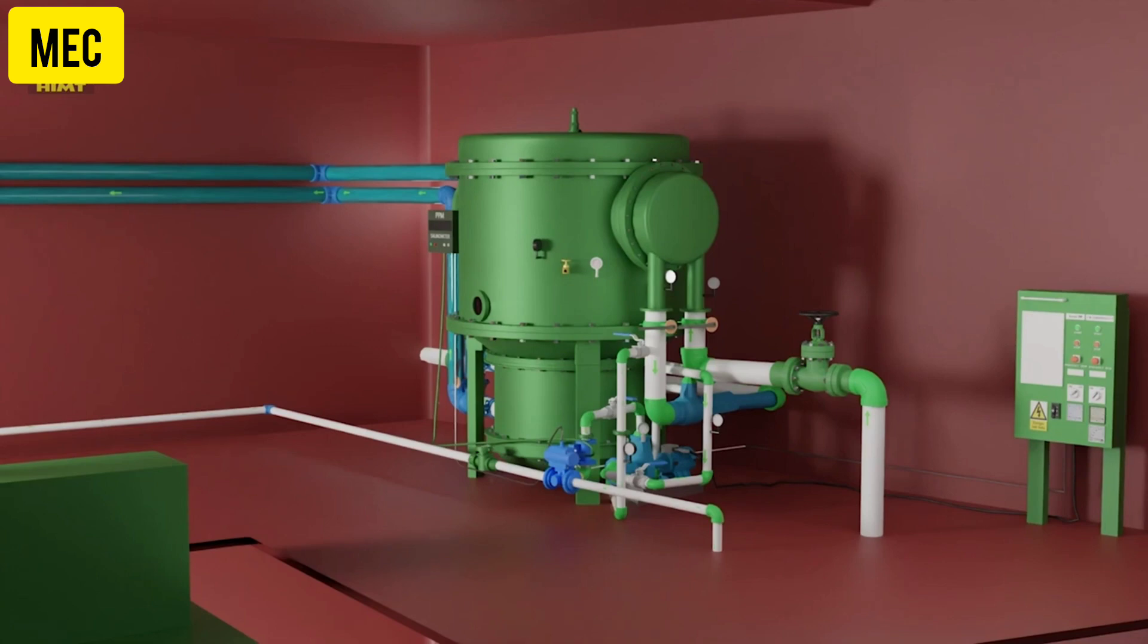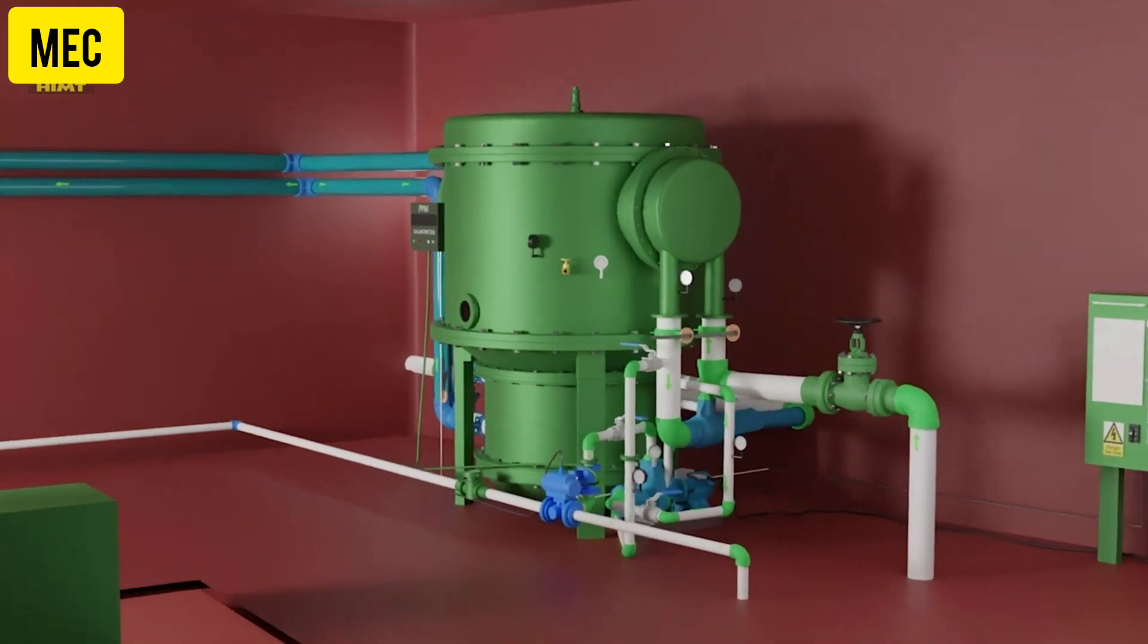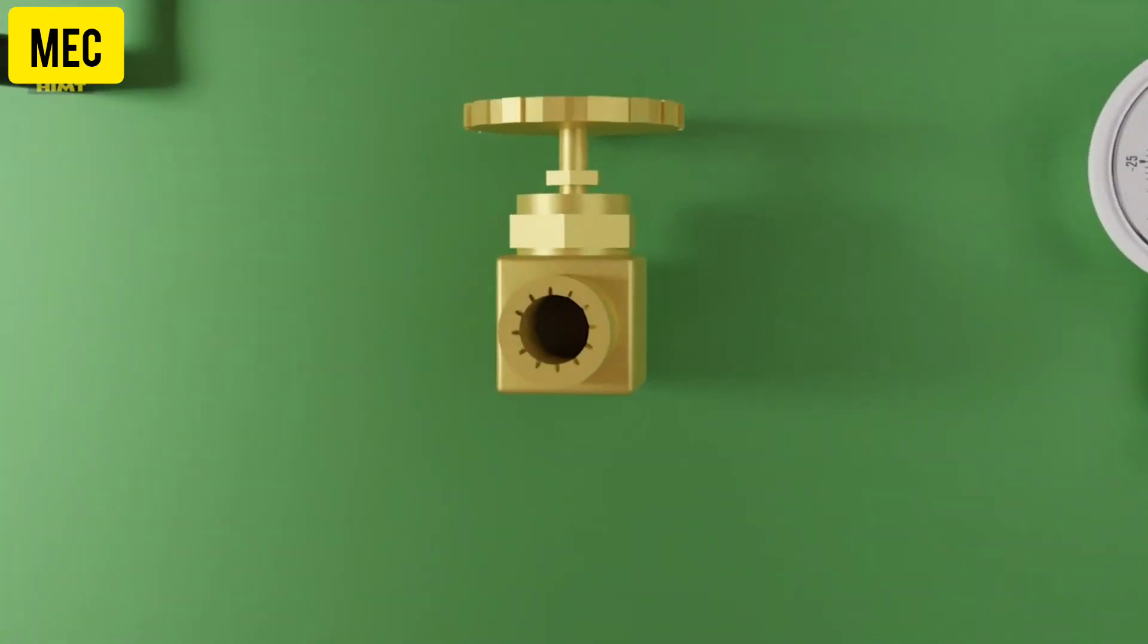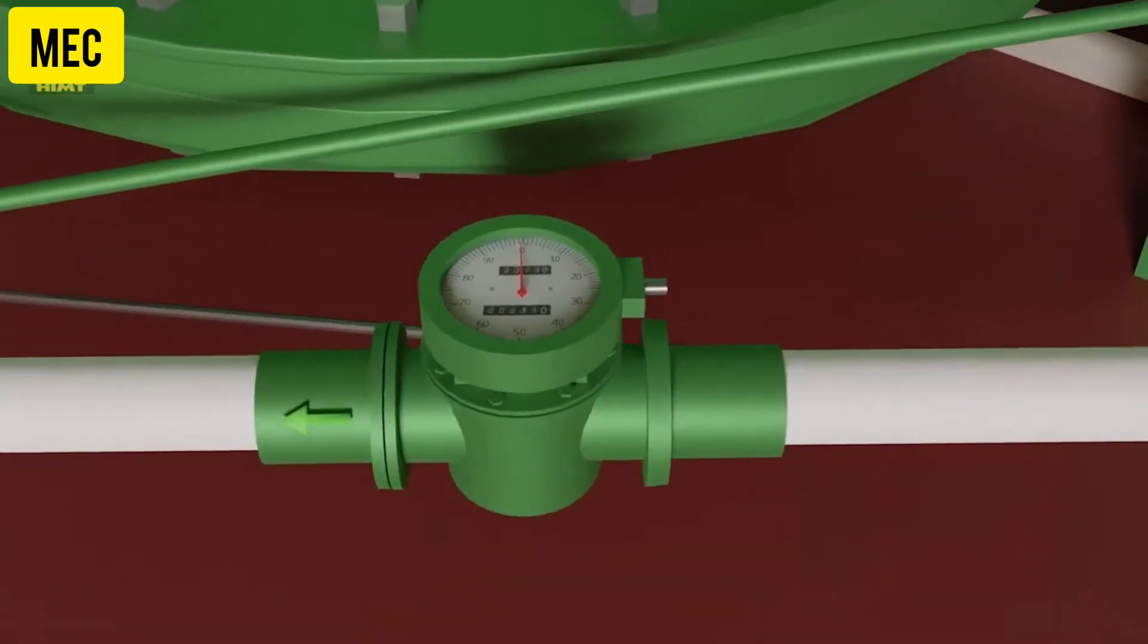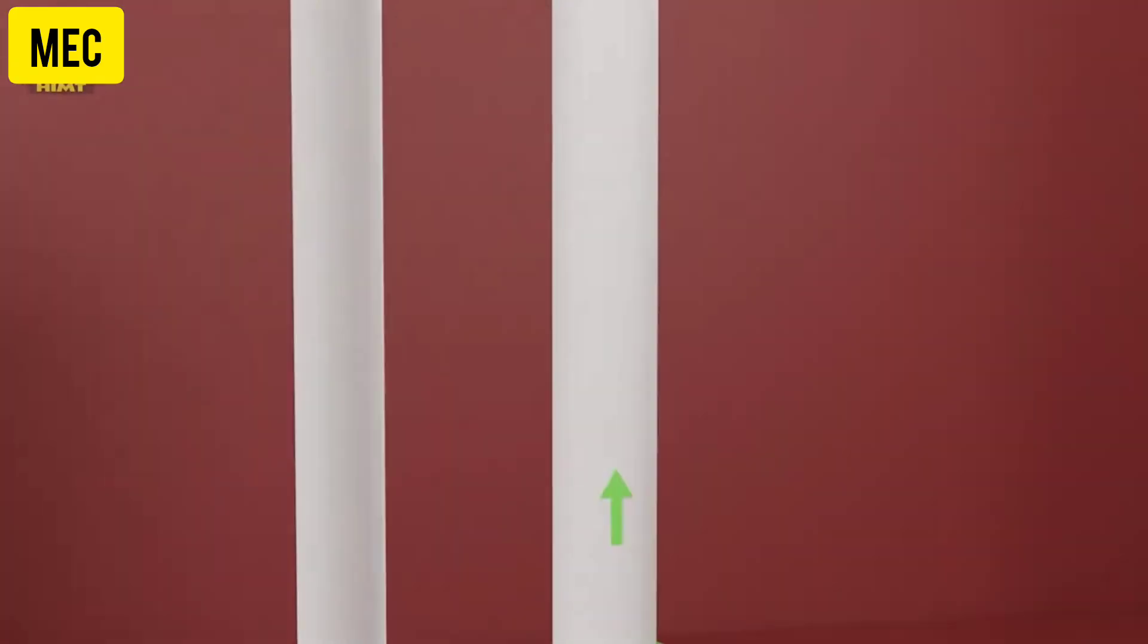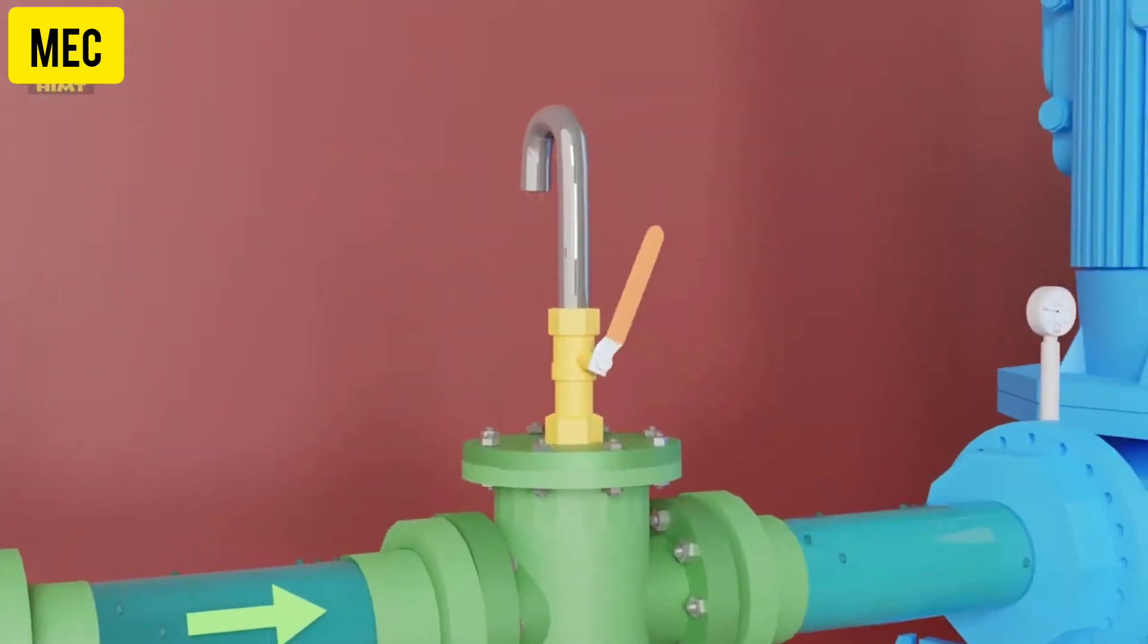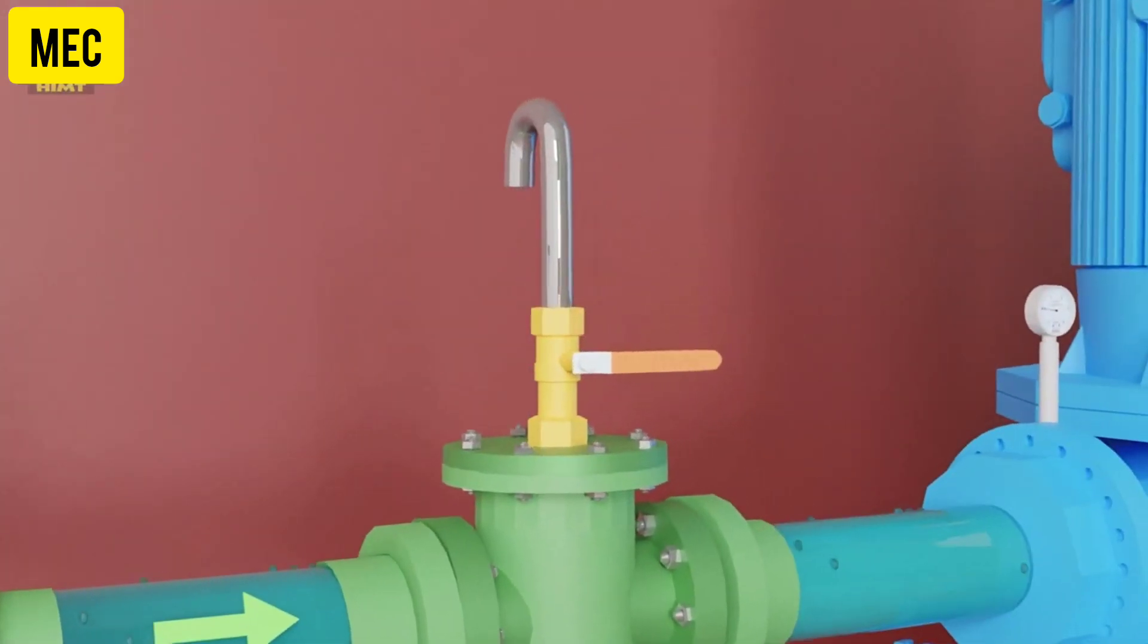Now let's see the step-by-step operation of a freshwater generator. Let's dive in. Let's begin by shutting the vacuum breaker valve and take note of the flow meter reading. Now open the suction side valves of the ejector pump and purge the air from the system using the vent valve on the strainer.